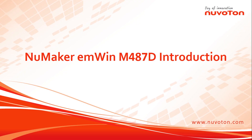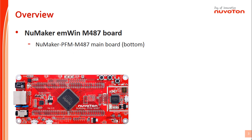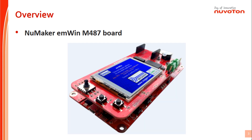Here is a fast introduction of the NuMaker EMWIN N487 board. The NuMaker EMWIN N487 board is composed of a NuMaker PFM N487 main board and the NuMaker N487 Advanced daughter board. This board provides users a development hardware board based on the N487 MCU chip to implement dedicated applications, especially the NuMaker EMWIN GUI display and HMI function on a TFT LCD screen with touch input.